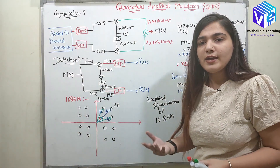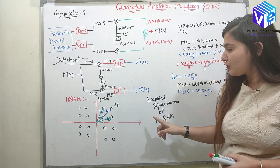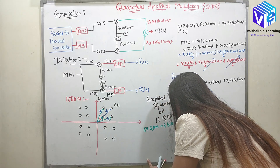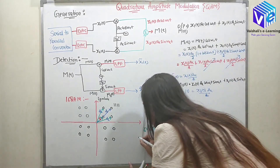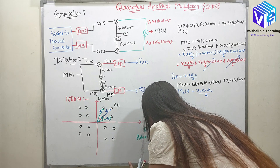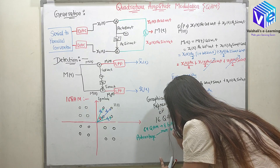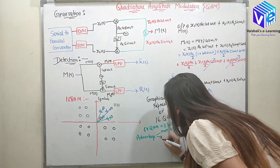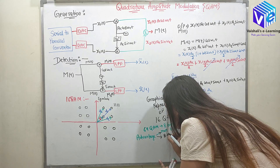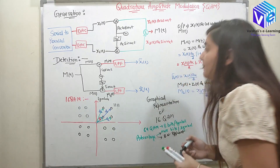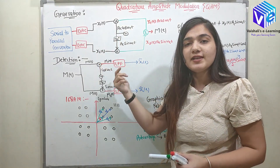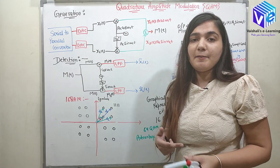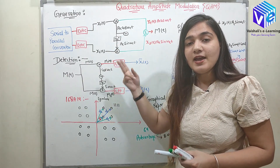Now if I have 64-QAM, how many bits per symbol would be sent? In 64-QAM, I will be sending 8 bits per symbol. So this is the advantage of QAM. The first advantage is more bits per symbol can be sent, which increases the data rate. The second advantage is that it is bandwidth efficient — I am sending two signals X1T and X2T over the same bandwidth. In AM, I was using the same bandwidth to send one signal, so QAM is more bandwidth efficient.